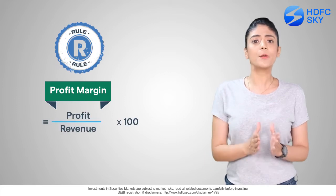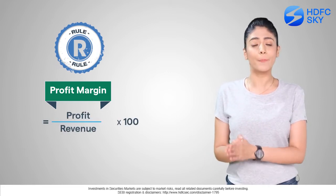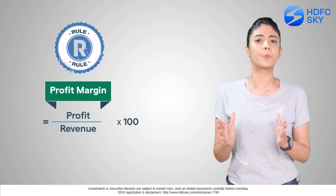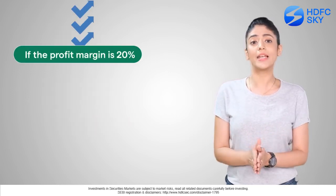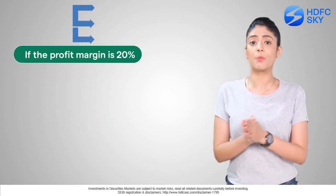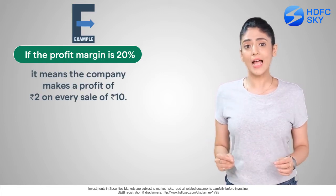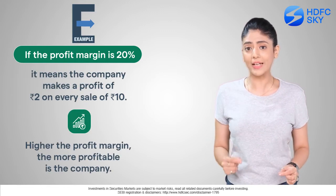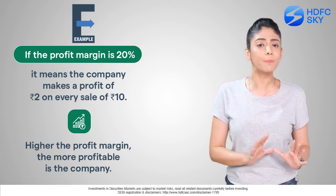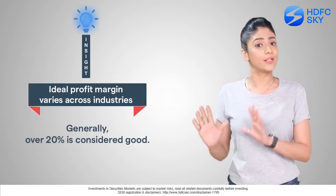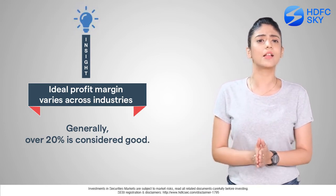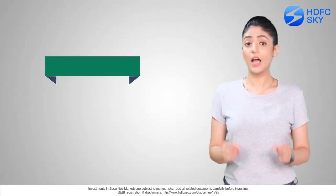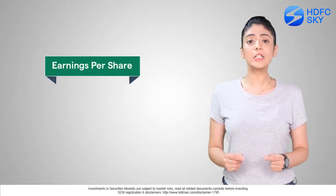Number three: Profit Margin. Profit margin tells us how much profit the company made on its sales, in percentage terms. Generally we look at the net profit margin, which is measured as net profit divided by revenue, multiplied by 100. Profit margin varies across industries — generally 20% and above is considered good.